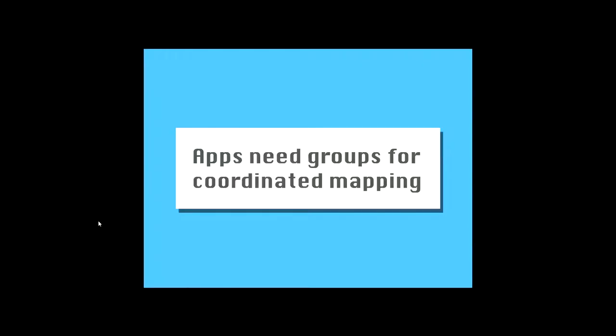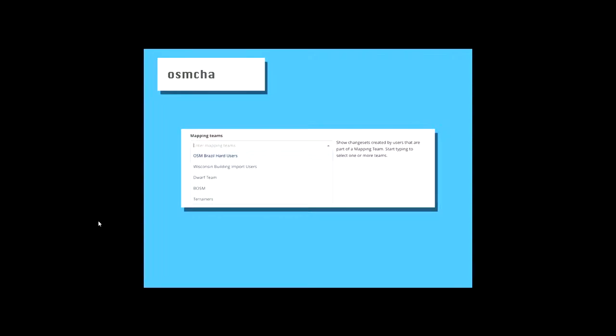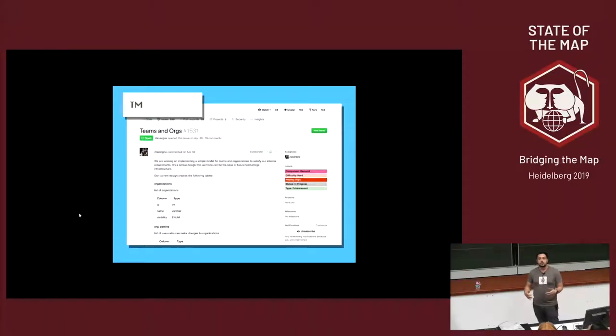And we know that apps are building tools for coordinated mapping. So we've got OSM Cha here. You know, they have a concept of teams. They have a concept of lists. And then in the tasking manager, there's this pull request and issue that says, hey, we also need teams. But OSM Cha and tasking manager, sure, they meet up here. And they can do that.